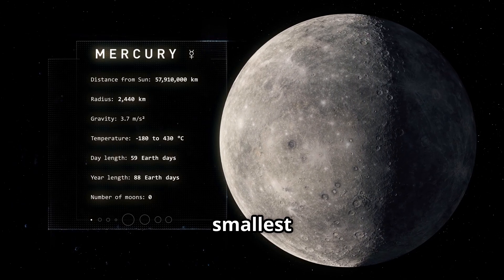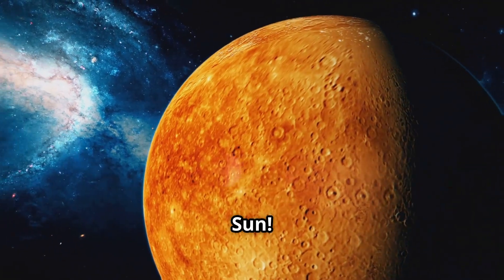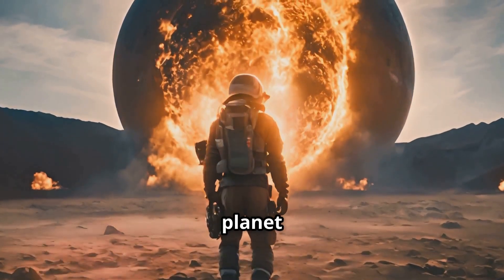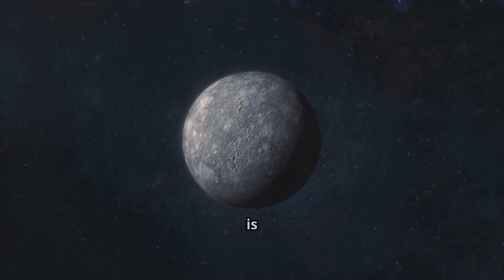Mercury is the smallest planet and closest to the sun. It's super hot during the day and freezing at night. Imagine stepping on a planet where your feet are burning, but your head is freezing.